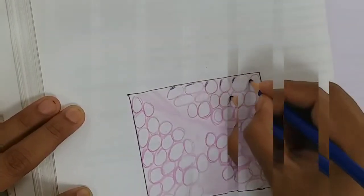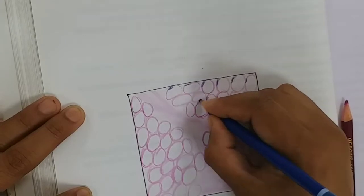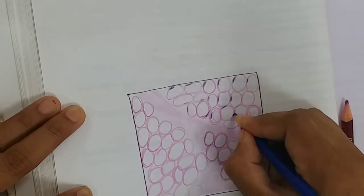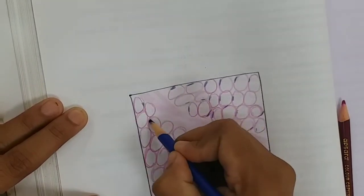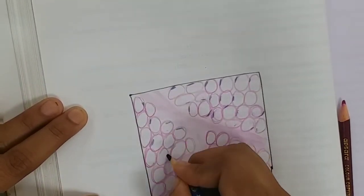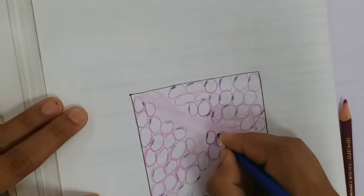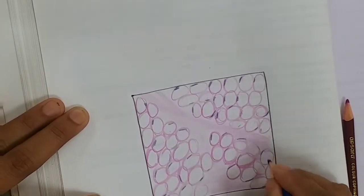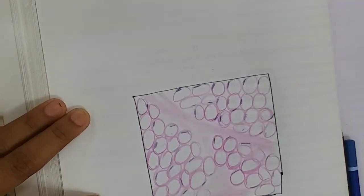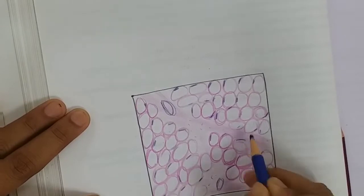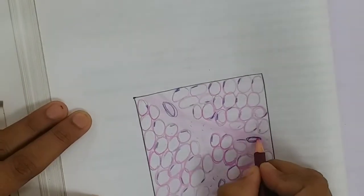The fat content has a peripherally placed flat nucleus, seen as a thin rim of cytoplasm. Centrally, the cell looks like an empty cell. The whole adipose tissue appears as a honeycomb appearance, and a single cell appears as a signet ring appearance.